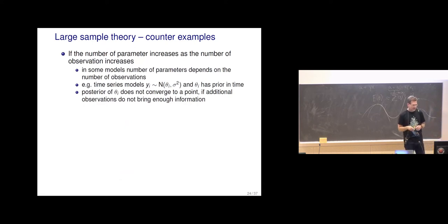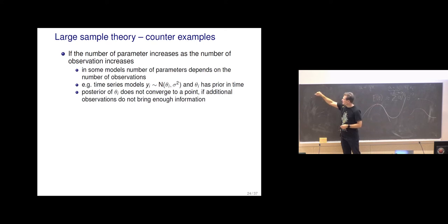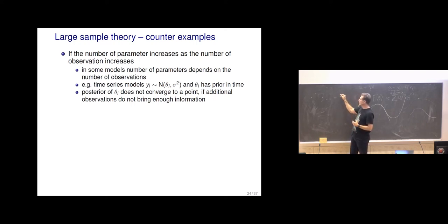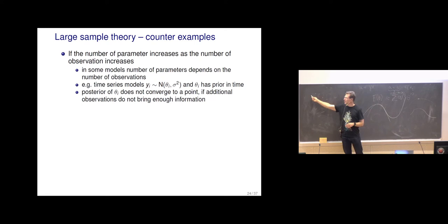As already mentioned, posterior convergence toward Gaussian often requires a parametric model where the number of parameters does not increase with the number of observations. A counter-example is time series: when we get more observations, we may be learning some features of the process and those parameters' posteriors may get narrower, but getting more data here doesn't help us learn what's going on at a specific point. For example, getting more global temperature measurements doesn't decrease uncertainty at a particular past time point.